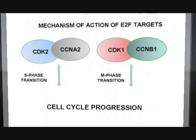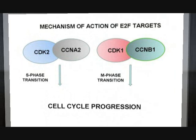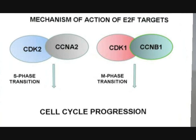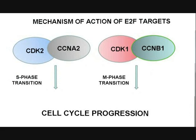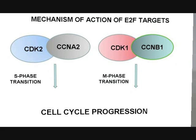I'd like to stress again the role exerted by two molecules which are target genes of E2F factors: cyclin A2 and cyclin B1. When cyclin A2 is coupled with CDK2, we have the S phase transition, while cyclin B1 couples with CDK1 and we have the M phase transition. This slide stresses again the role of target genes of E2F factors.